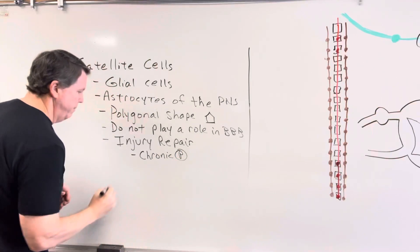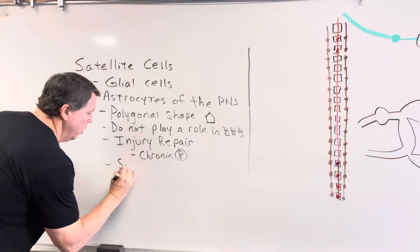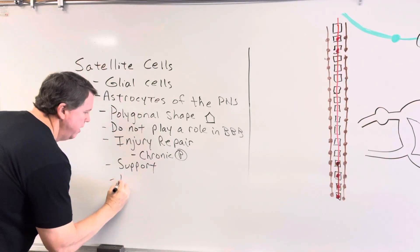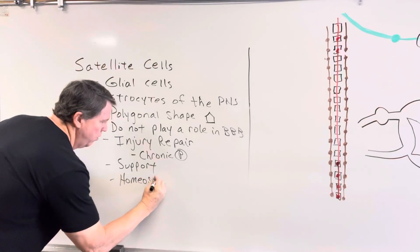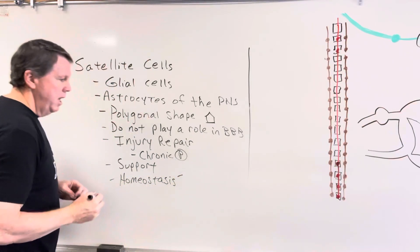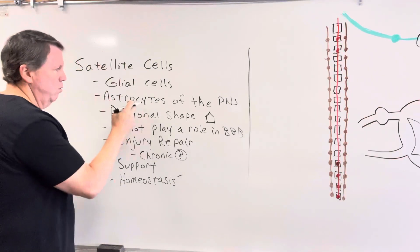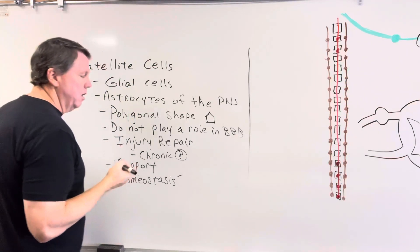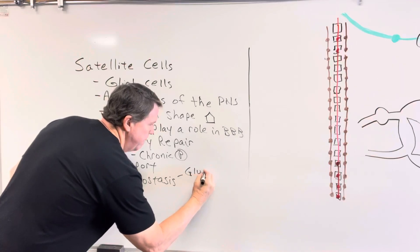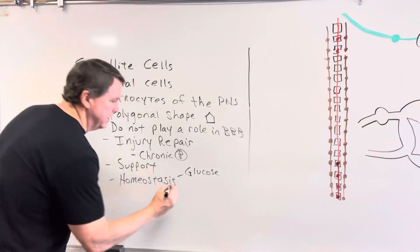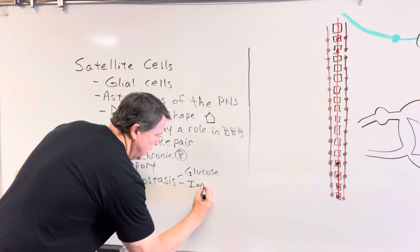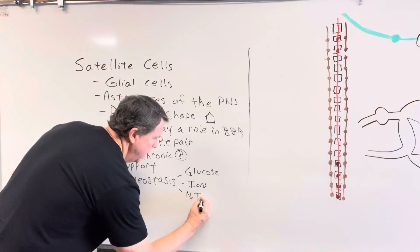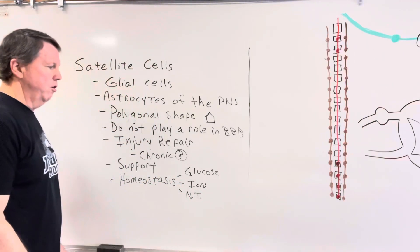Satellite cells also play a role in support — just like astrocytes do — and in homeostasis. Their homeostatic roles mirror those of astrocytes: they regulate the amount of glucose that neurons receive, they regulate the concentration of ions in the area (especially potassium), and they manage neurotransmitters by making sure there aren't excess neurotransmitters lingering around.